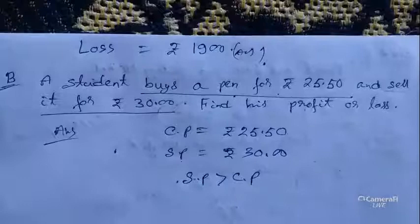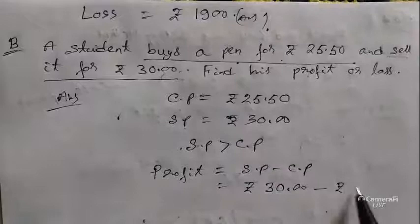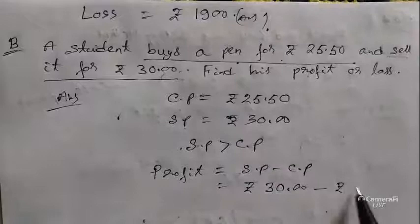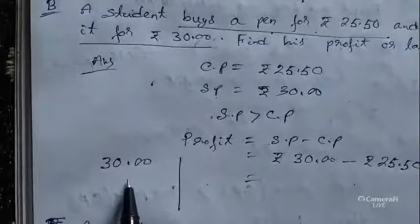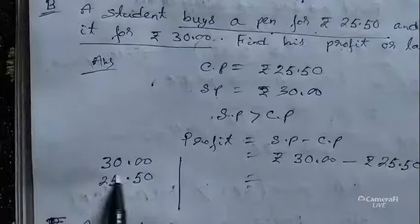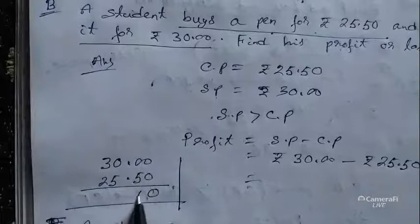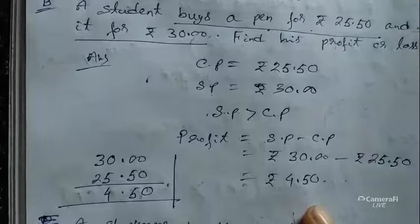Profit equals SP minus CP. SP is 30.00 and CP is 25.50. Subtracting: from 30.00 we subtract 25.50. Below the decimal: 10 minus 5 is 5 with borrowing — we get rupees 4.50. So the profit is rupees 4.50. This is the answer.